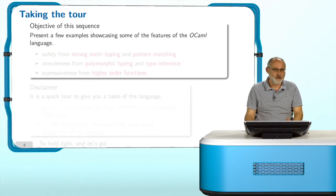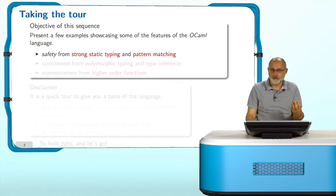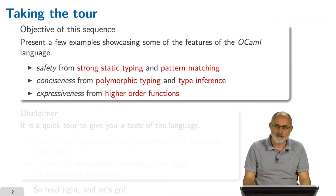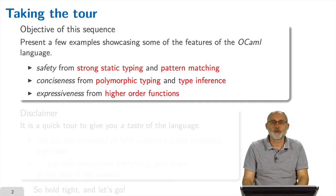Let's take the tour. The objective of this sequence is just to present you some examples that showcase some of the advanced features of the OCaml language. You remember the users told us what they like is safety because of strong typing and pattern matching, conciseness because of polymorphic typing and type inference, and expressiveness from higher order functions.